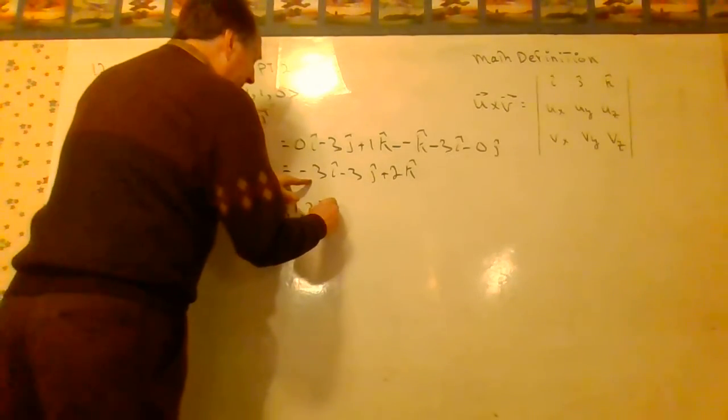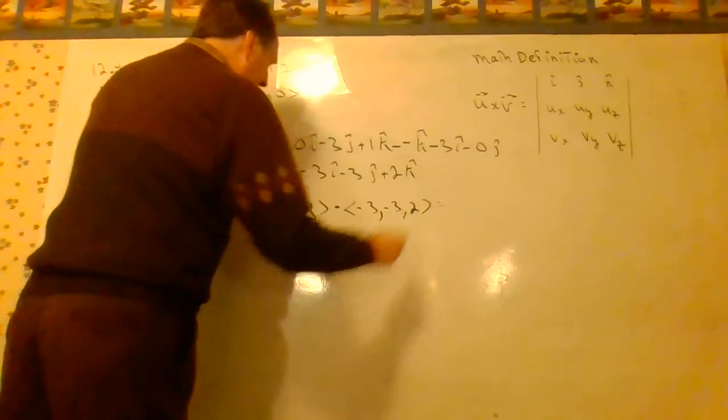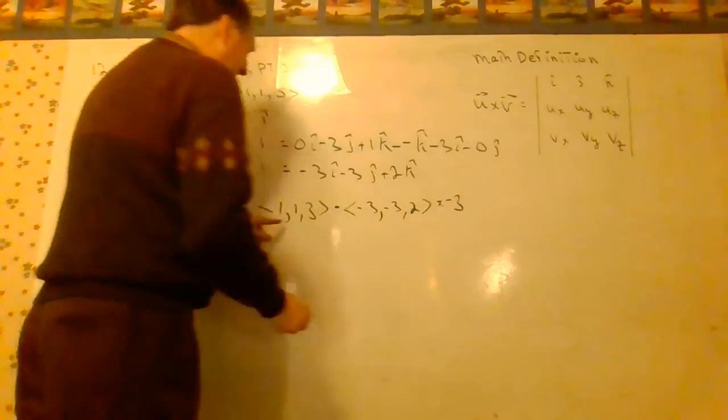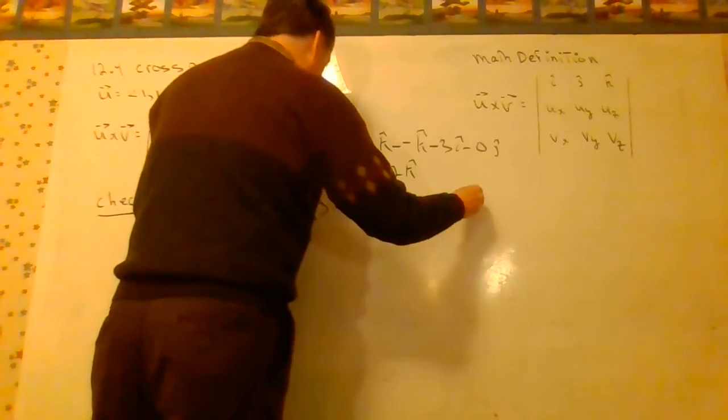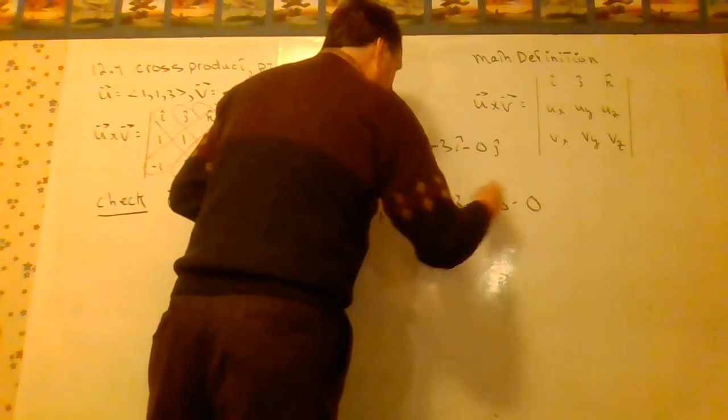You can transition to pointy bracket notation. Negative 3, negative 3, 2. And we got 1 times negative 3 is negative 3. 1 times negative 3 is negative 3, 3 times 2 is plus 6. And we get 0.